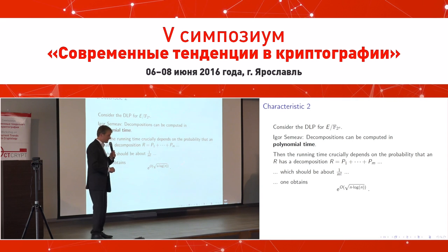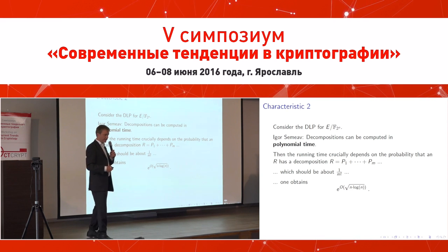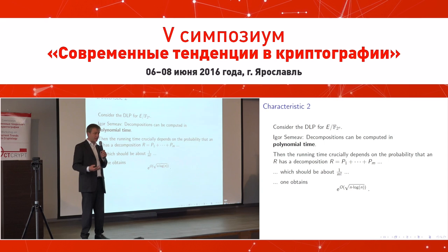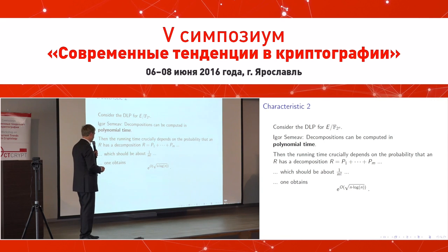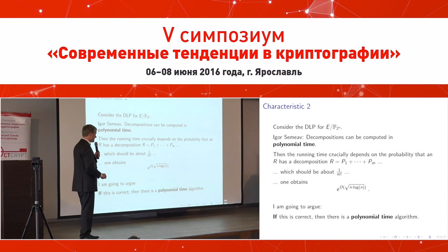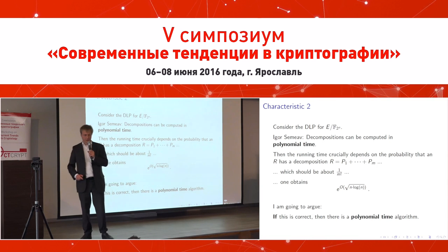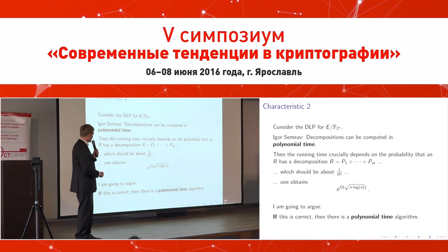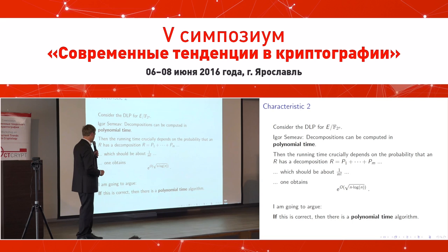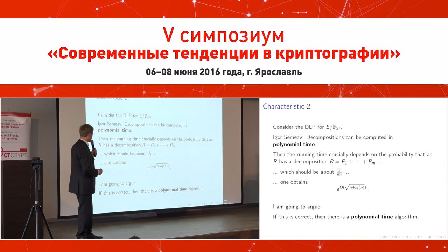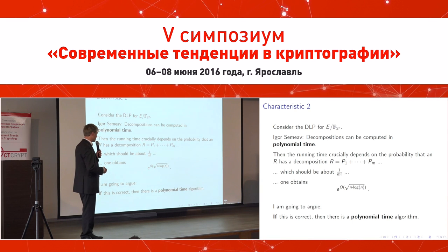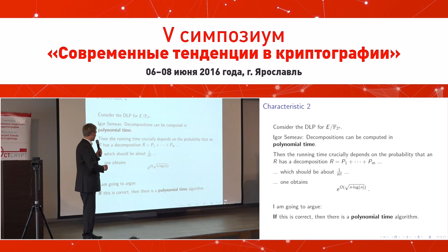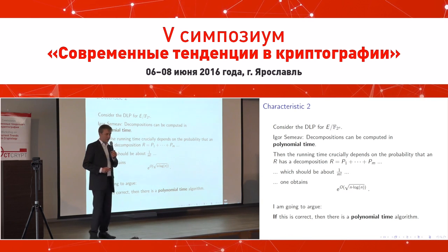Semaev obtains a result of the same form as the classical result for finite prime fields — this is not a coincidence because you have polynomial-time relation generation and the same kind of probability-theoretic problem. I'm going to argue that if this conjecture is correct — in particular the polynomial-time part — then there is in fact a polynomial-time algorithm to solve the elliptic curve discrete logarithm problem. You can either believe in polynomial-time decompositions and accept this consequence, or say it's completely weird and therefore the conjecture is likely not correct.